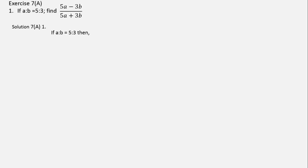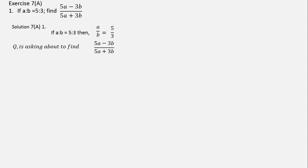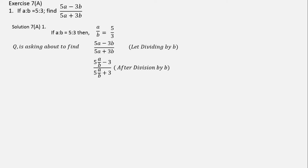The very first thing we should write: if a is to b is equal to 5 is to 3, then we can also write this as a/b = 5/3. The question is asking to find (5a minus 3b) over (5a plus 3b). So let's divide this equation by b. If we divide this, we can see 3b/b gets cancelled and we have 3, and we have 5a/b minus 3.